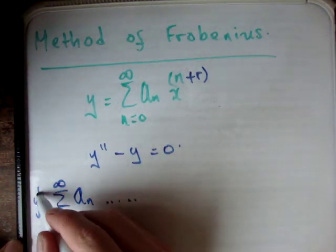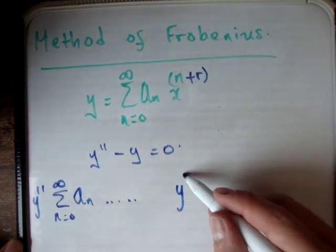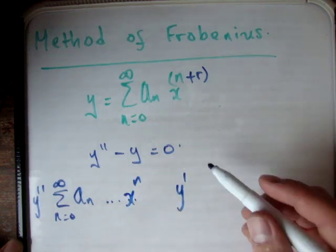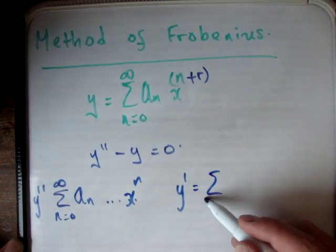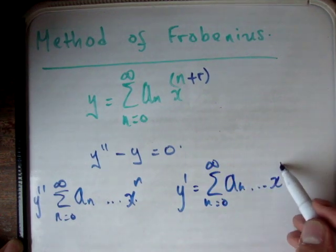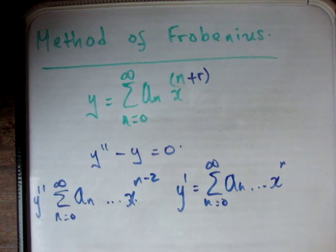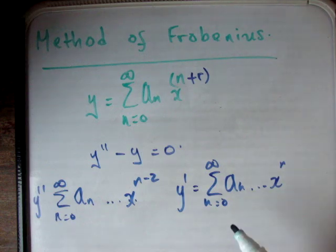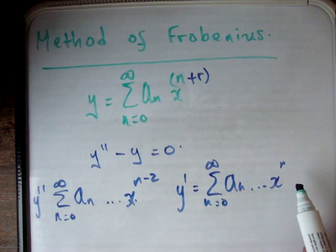You might have y to x to the n, and you might have y prime equals something similar: a_n times x to the n. This might actually be minus 2 like that. What we did was we said that in order to solve the equation, we had to have both of these power series beginning at the same point but also having the same power on their variable.